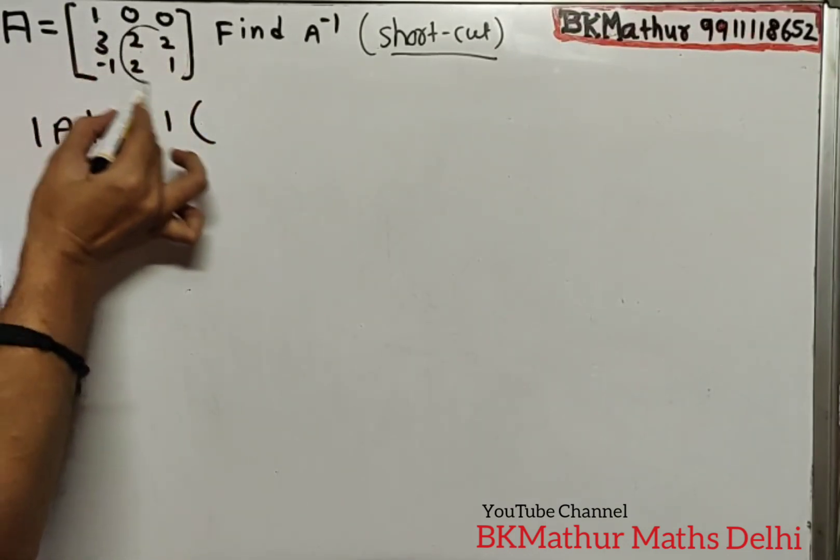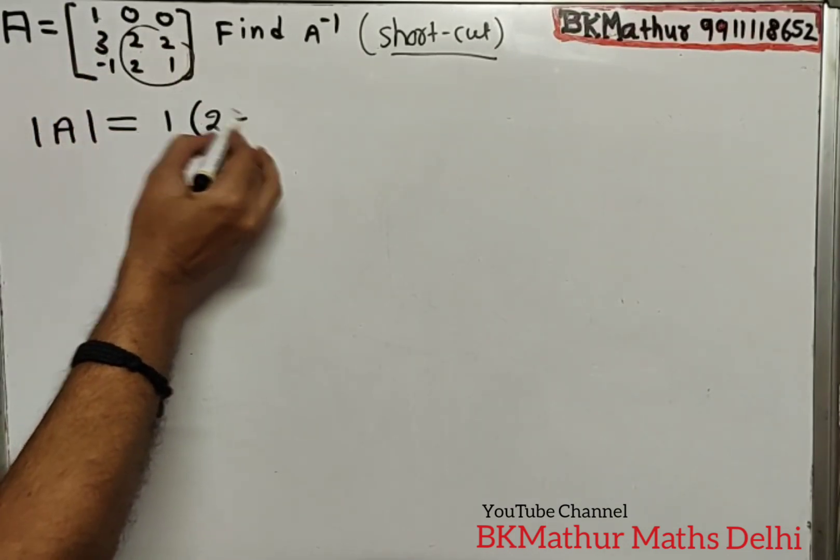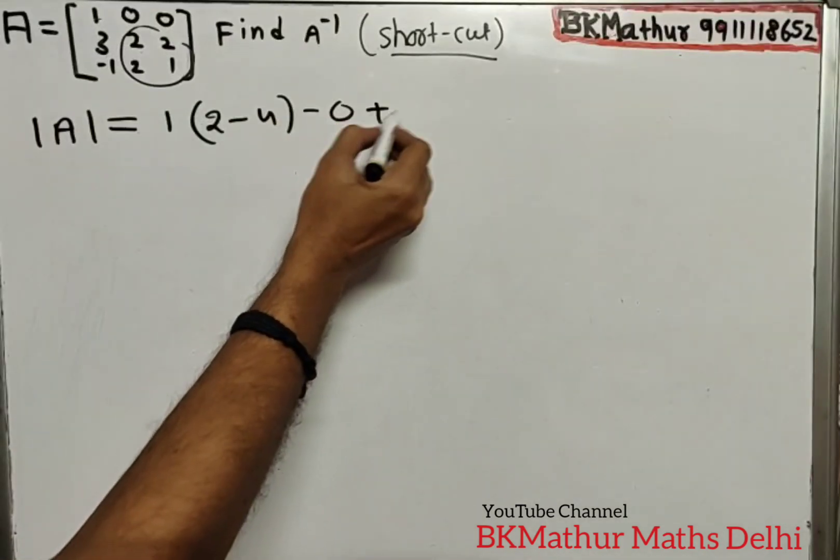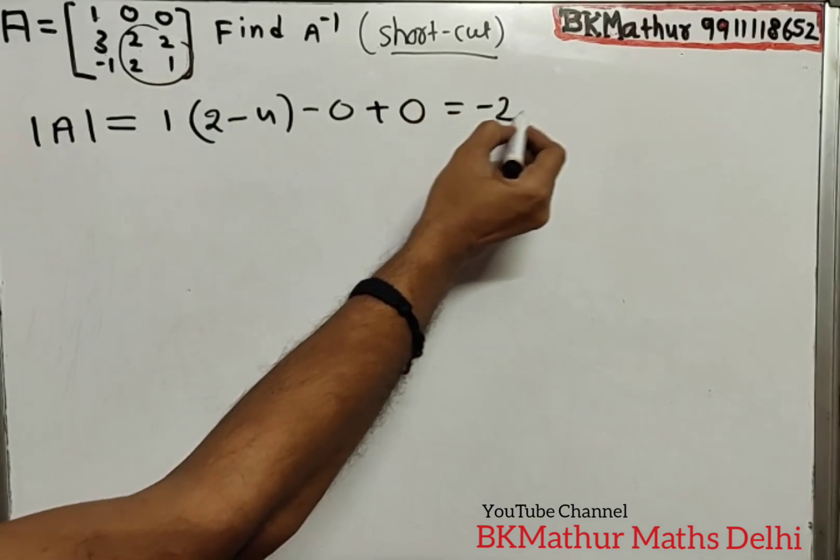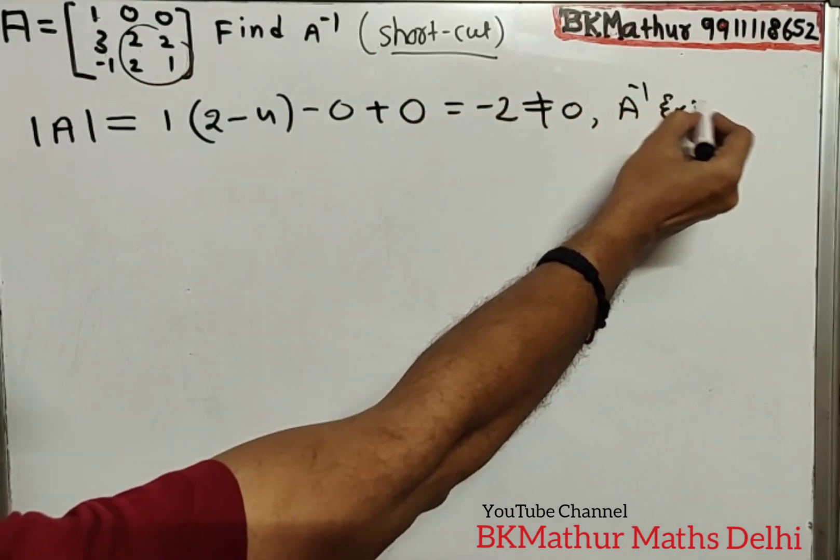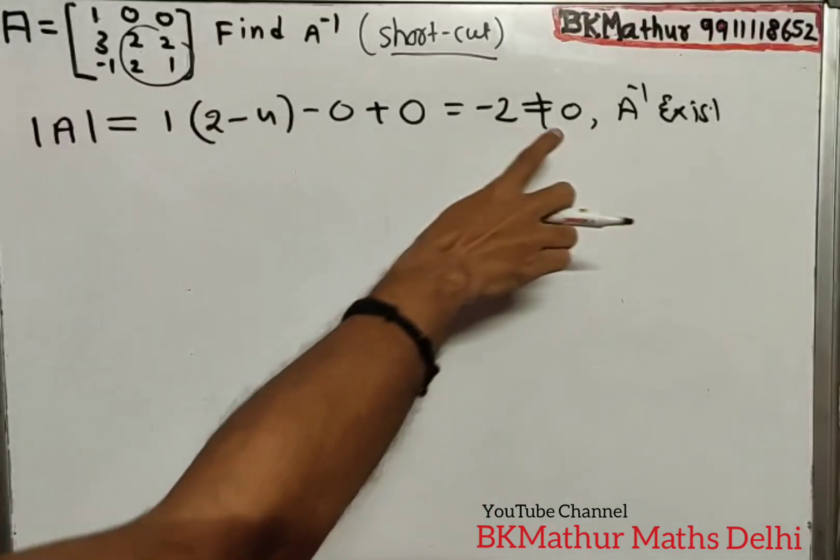|A| = 1(2-4) + 0 - 0. This multiply will be 2, and this multiply will be 2, so 2×2 is 4. Then 0, so everything becomes 0. You get minus 2, which is not equal to 0. This means A inverse exists. Keep in mind, determinant should not be zero. If determinant is zero, don't proceed further.